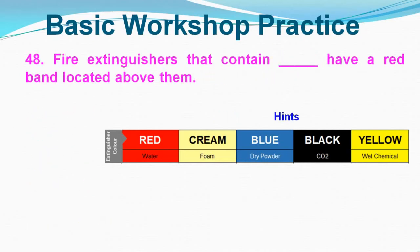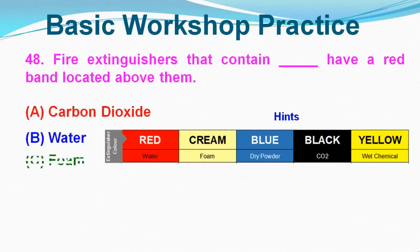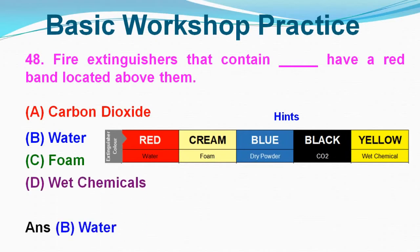Question No. 48: Fire extinguishers that contain which agent have a red band located above them? Option A: Carbon Dioxide, Option B: Water, Option C: Foam, Option D: Wet Chemicals. Correct answer is Option B, Water.